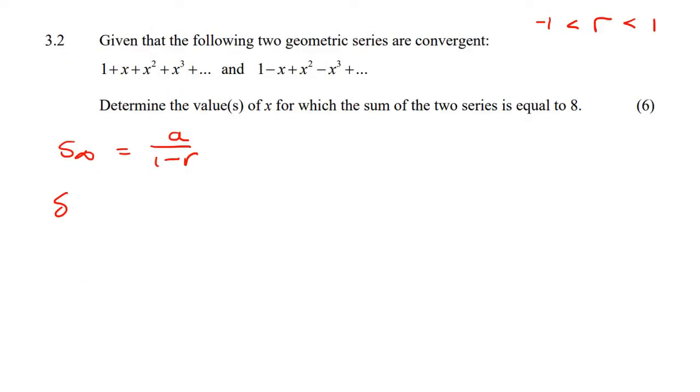So let's quickly do that for this one. So if we're to work out the sum to infinity, your a value is term 1, which is 1, and then r is your ratio. Now, to work out your ratio, you can just say term 2 divided by term 1, which is going to be x over 1, so that's just x. So that's the sum to infinity of that one.